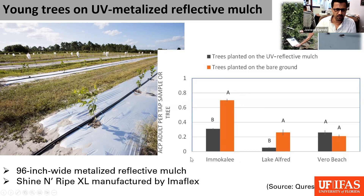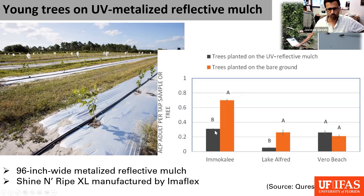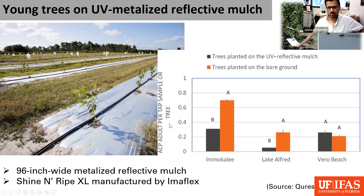We were seeing reductions in psyllid populations — the mulch was providing, as you can see here for Lake Alfred and Immokalee, almost more than 50% reductions. We have also seen reductions in the Vero Beach area as well, not only in the adult populations but also in the immature populations. The mulches used were 96 inches wide, which were wider than the mulches previously tested.